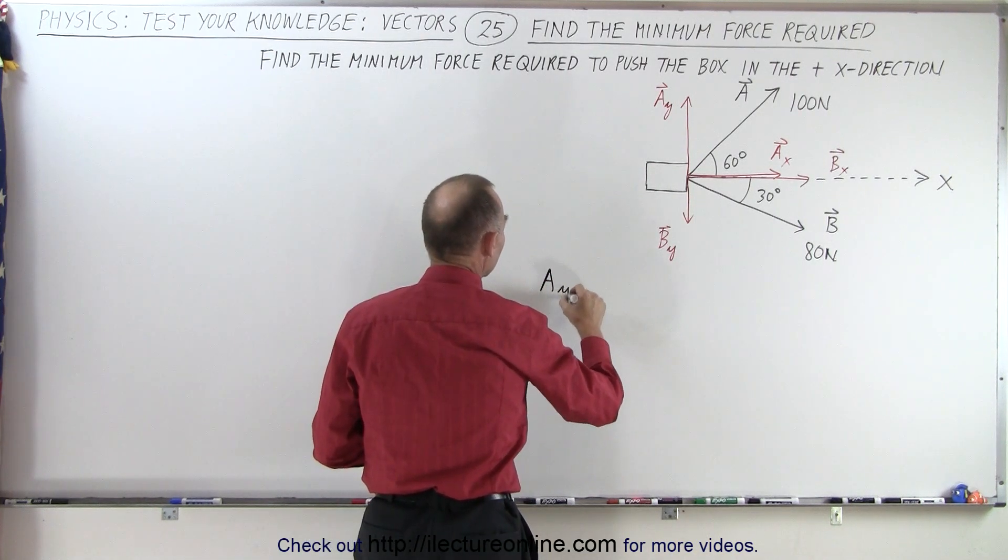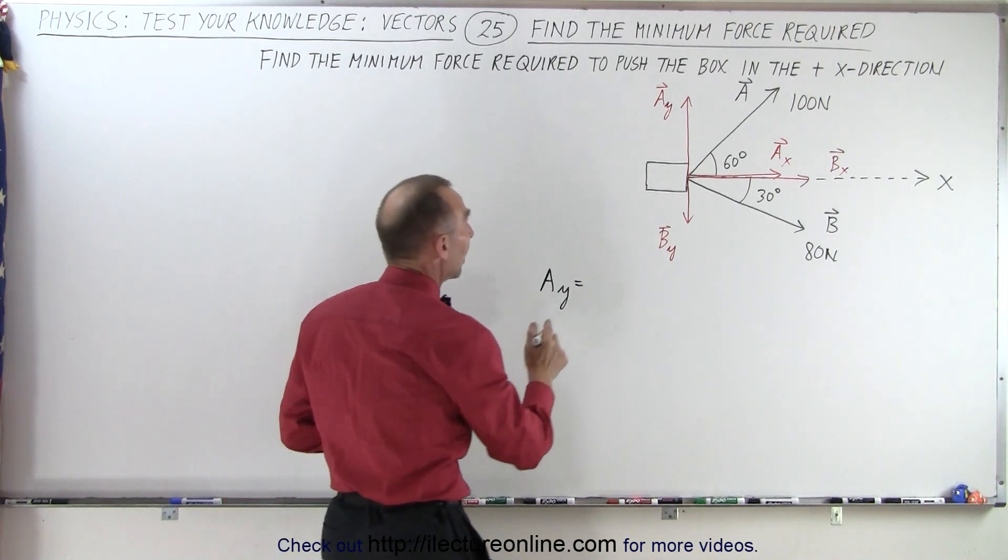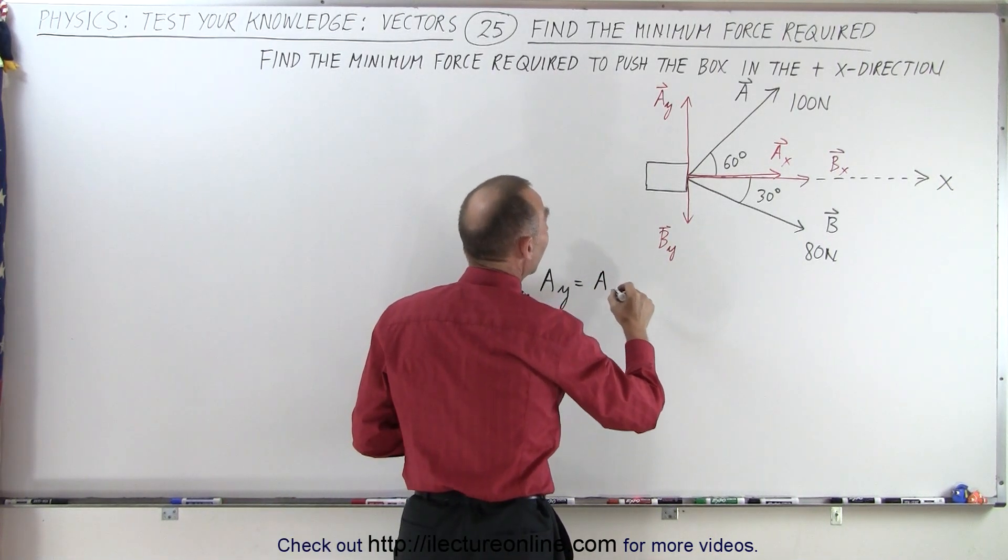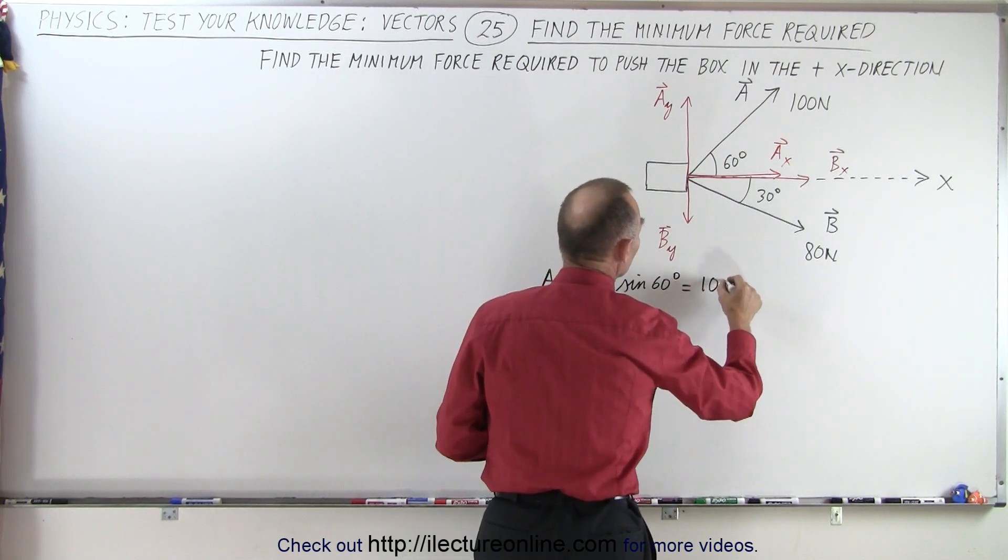So a sub y, the magnitude of that, so we don't care about the sign right now, simply the magnitude of a sub y is going to be a times the sine of 60 degrees, which is equal to 100 newtons times the sine of 60 degrees,